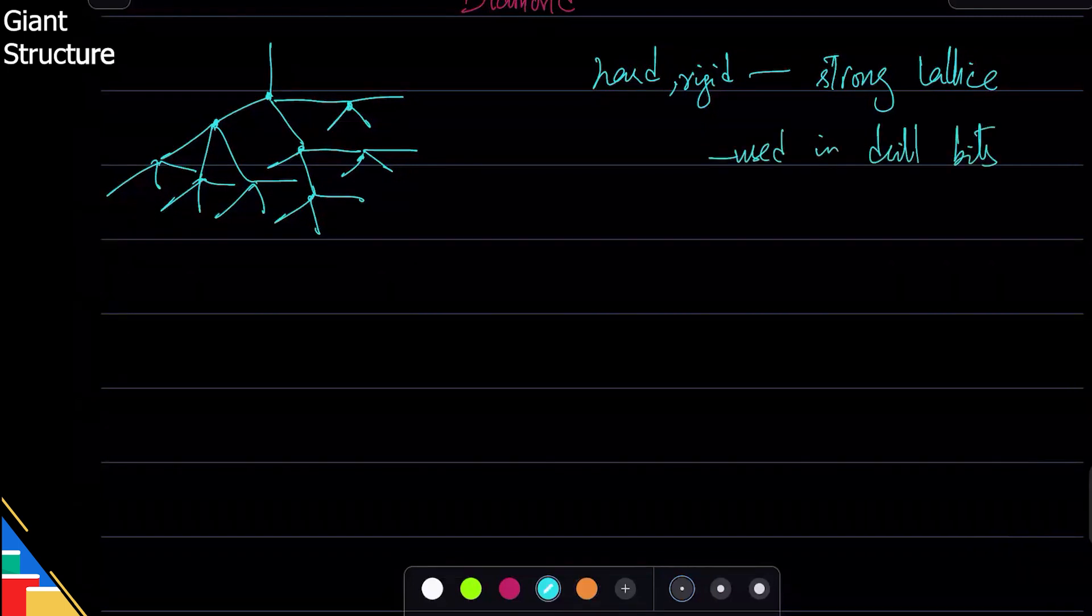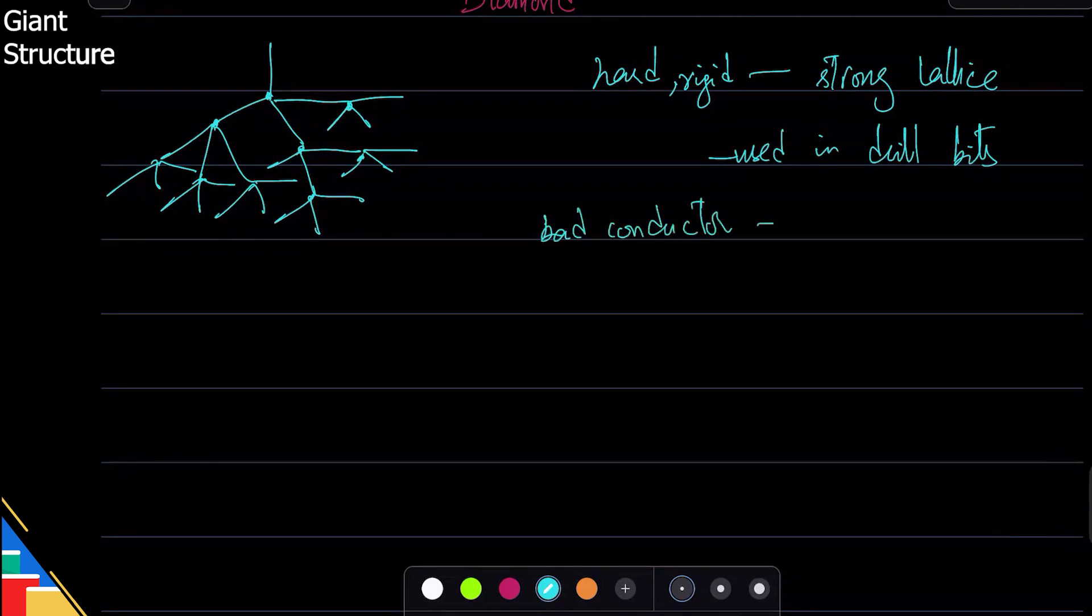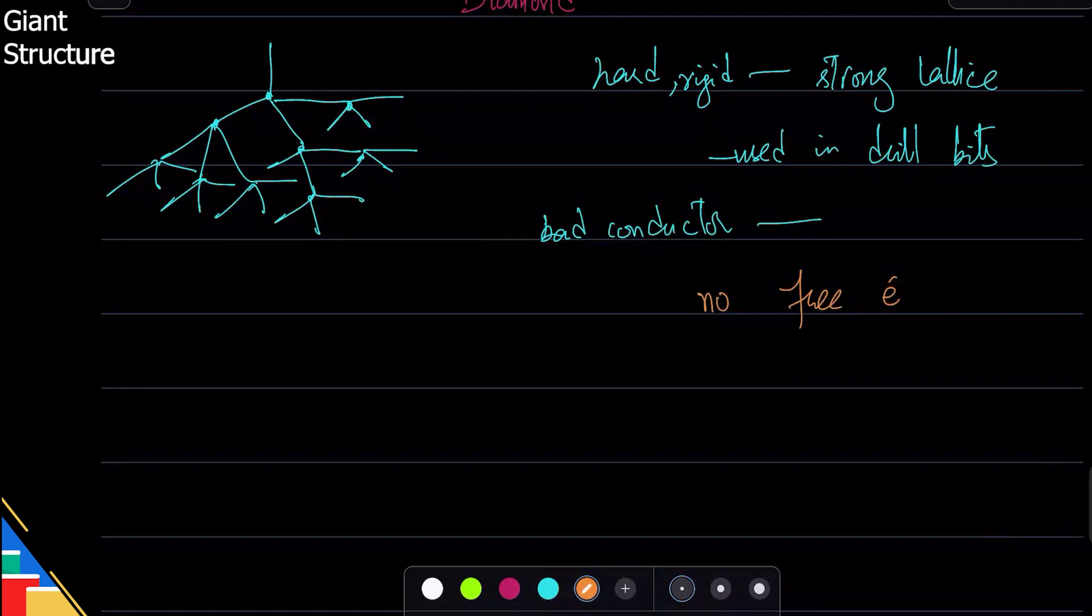Drilling—the tip that's used, we use diamond on it. This is not a good conductor, it is a bad conductor, and the reason for that is it has no free electrons because all electrons that it has in the last shell are involved in bonding.